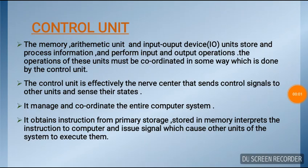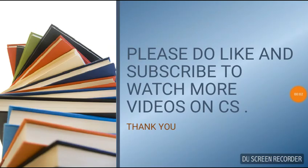Category 5: Control Unit. The memory, arithmetic unit, and input/output (I/O) units store and process information and perform input and output operations. The operations of these units must be coordinated, which is done by the control unit. The control unit is effectively the nerve center that sends control signals to other units and senses their states. It manages and coordinates the entire computer system. It obtains instructions from primary storage, interprets them, and issues signals that cause other units of the system to execute them. Please like and subscribe to watch more videos on CS. Thank you.